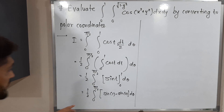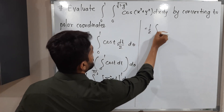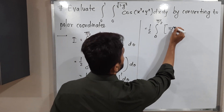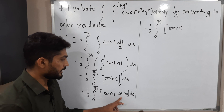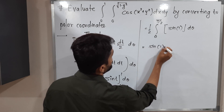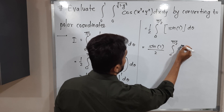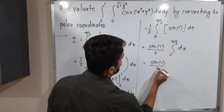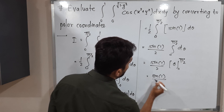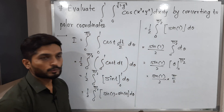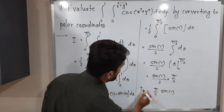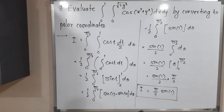Since sin(1) is a constant, it comes outside: I = (sin1)/2 · ∫(0 to π/2) dθ = (sin1)/2 · [θ] from 0 to π/2 = (sin1)/2 · (π/2) = π·sin(1)/4. This is the required answer.